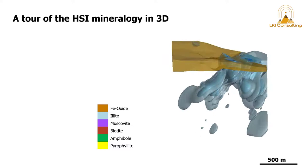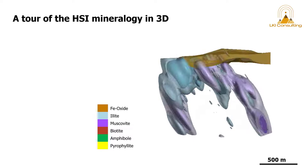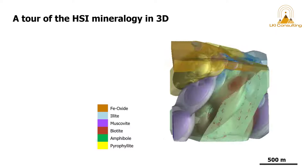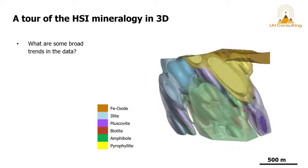I'm going to be mostly silent for this except for when I narrate how beautiful this system is. Here I'm using numerical modeling feature in Leapfrog to look at broad trends in the data. So the question that we can ask ourselves are what are some of the broad trends in the data?